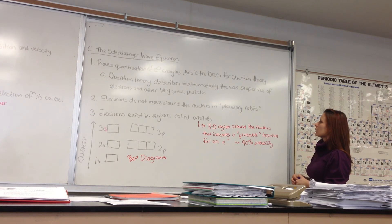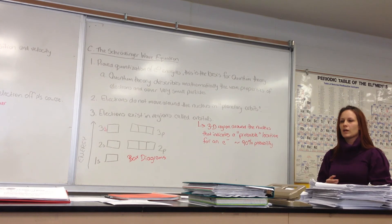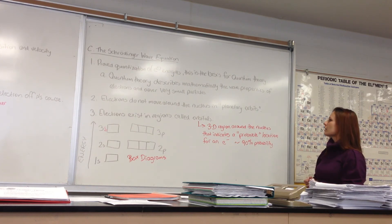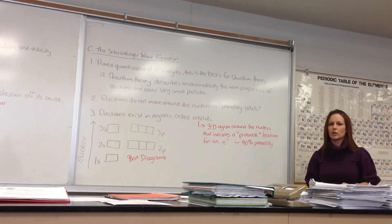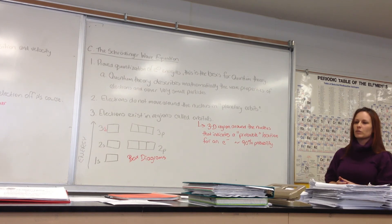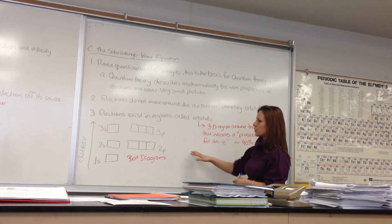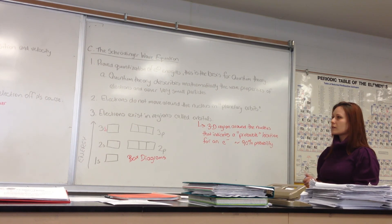Quantum theory describes mathematically the wave properties of electrons and other very small particles. Electrons do not move around the nucleus in planetary orbits as figured out by Bohr — that's the way we learn things in chemistry to begin with, with our electron configurations. However, electrons do exist in regions called orbitals, which are three-dimensional regions around the nucleus that indicate a probable location. We don't know for sure that an electron is there, but we do know with about 90% probability that that is where you will find an electron. Putting the Schrödinger wave equation into a pictorial diagram, we have our electron box diagrams that we use to do our electron configurations — and this is thanks to the Schrödinger wave equation.